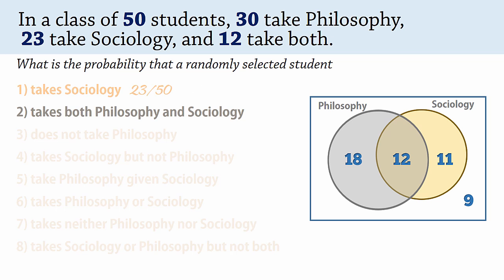Number 2: the probability of a student taking philosophy and sociology is the joint probability represented by this intersection, which is 12 divided by 50, or 0.24.